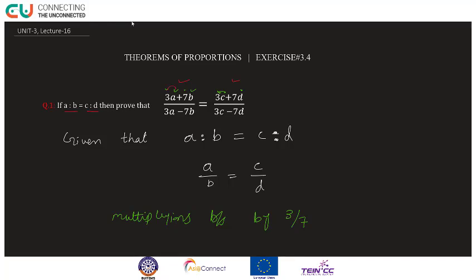A ke saath 3 aur B ke saath 7 chahiye. Aur kyun chahiye? Kyunki jab mere paas yeh honge, toh main componendo and dividendo theorem apply kar lunga, jisse yeh cheez proof ho jayegi.